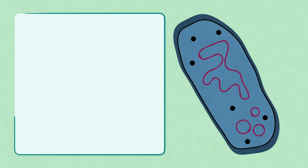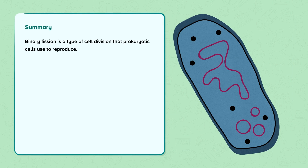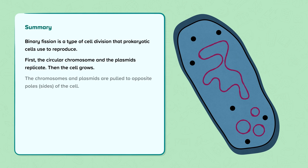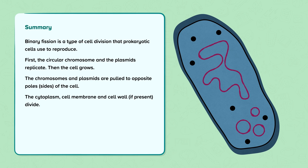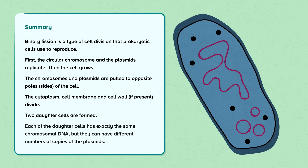In summary, binary fission is a type of cell division that prokaryotic cells use to reproduce. First, the circular chromosome and the plasmids replicate. Then the cell grows. The chromosomes and plasmids are pulled to opposite poles — another name for the sides — of the cell. The cytoplasm, cell membrane, and cell wall, if present, divide, and two daughter cells are formed. Each daughter cell has exactly the same chromosomal DNA, but they can have different numbers of copies of the plasmids.